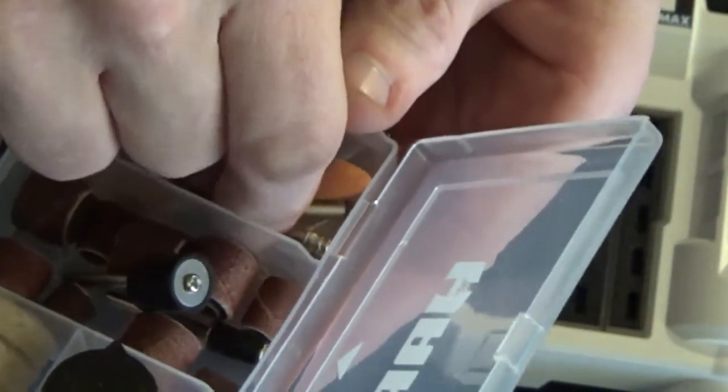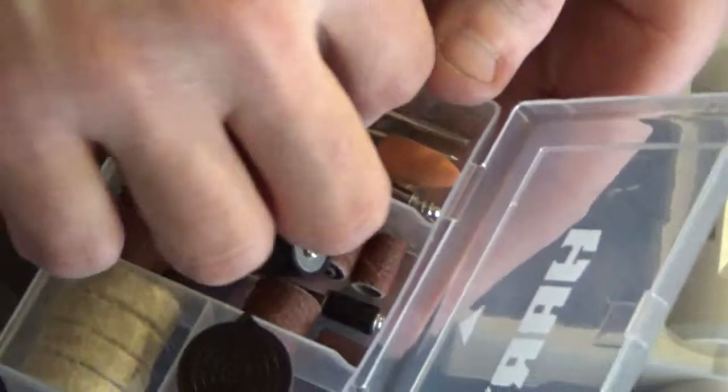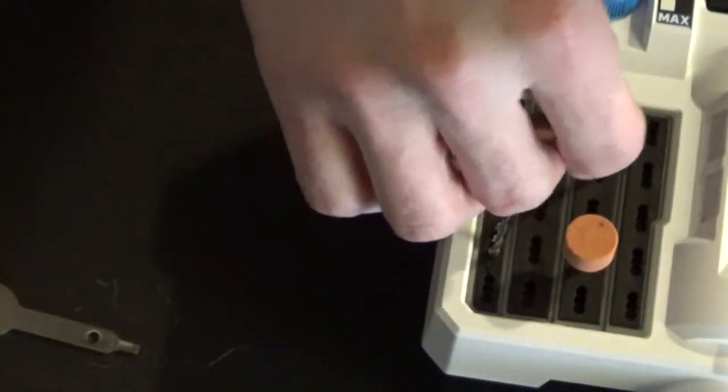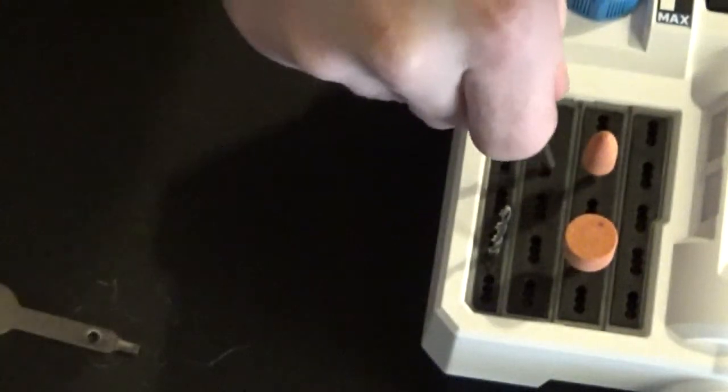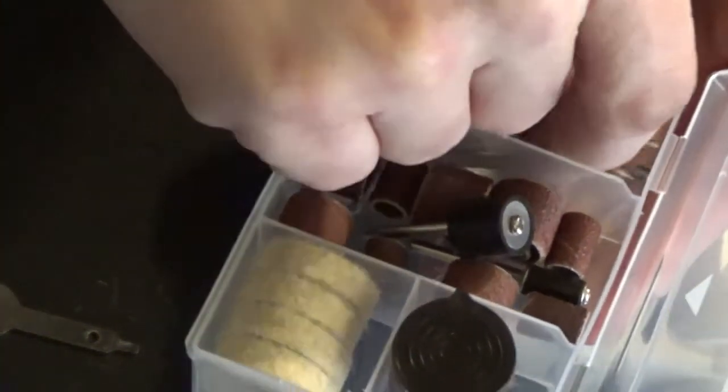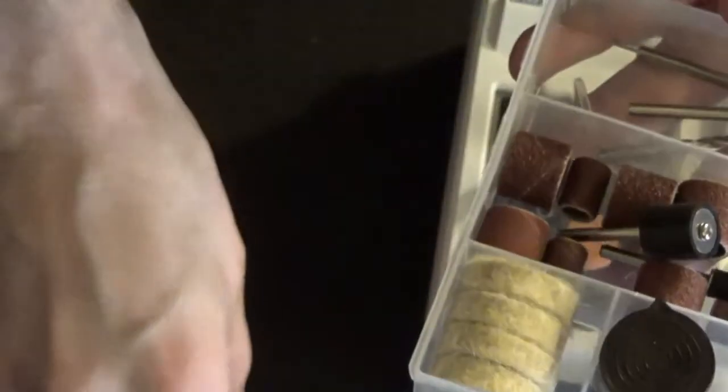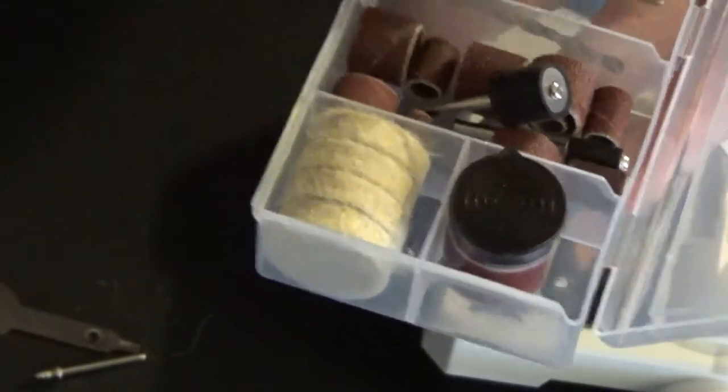Let's see what else we have. Oh, this is for your buffing wheel. I'm not even sure what these are. I'll have to figure that out later, stick those in there. Let's see what else. I wonder what would be the best for wood carving. That looks like I got two of these.